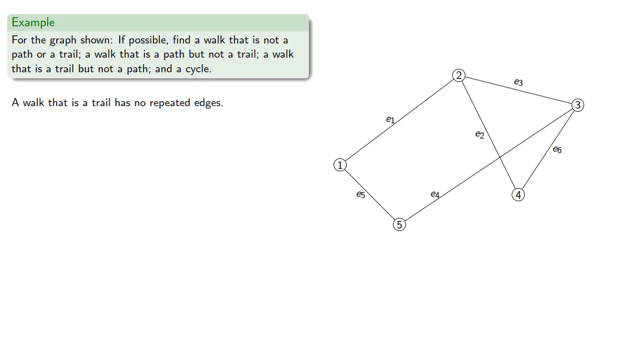A walk that's a trail has no repeated edges. If it's not a path, then it has a revisited vertex. So we just need to make sure we get back to a vertex using a different route. We could walk from 1 to 2 to 4 to 3 back to 2, and that revisits the vertex without reusing any edges.